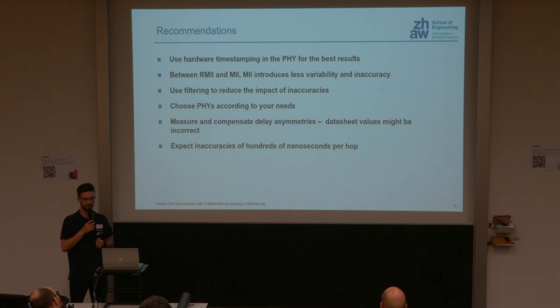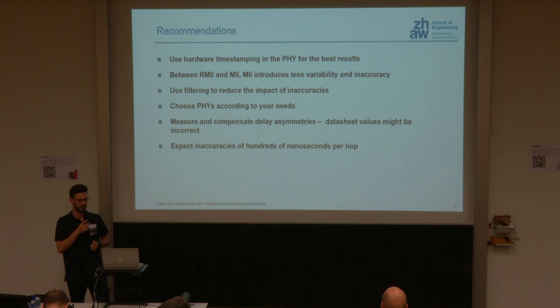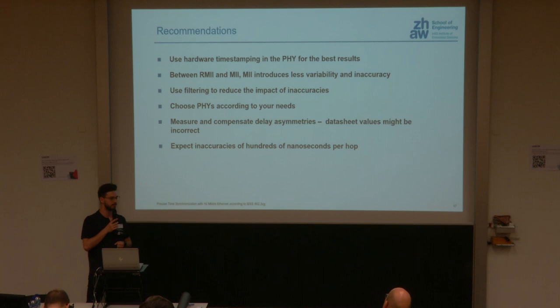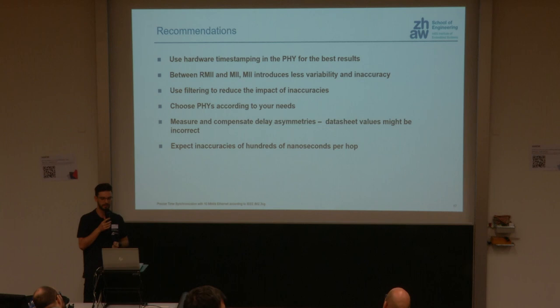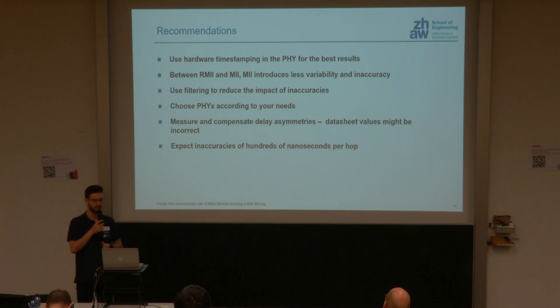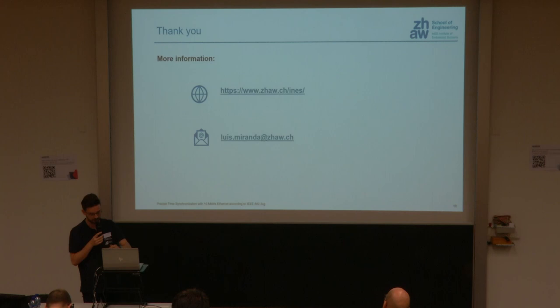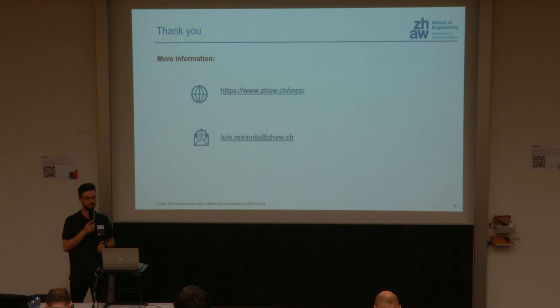To summarize recommendations: for precise time synchronization, use hardware timestamping inside the PHY for best results. If that's not possible, the MAC-PHY interface is your best option. Between RMII and MII, prefer MII as it introduces less variability. Some remaining inaccuracies can be improved with filtering. Different PHYs from different manufacturers behave differently, so choose carefully and measure the actual latencies — datasheets often contain incorrect values. You can still expect inaccuracies of hundreds of nanoseconds per hop, which matters only for high-accuracy time synchronization. Thank you very much.